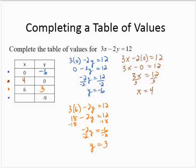And one more. If y equals negative 9, then I'd have 3x minus 2 times 9 is equal to 12. 3x minus 18 is equal to 12. Adding 18 to both sides, 3x would equal 30. And dividing by 3, x would equal 10.